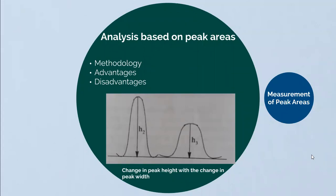Another method is analysis based on peak areas. In order to avoid the variation in the measurement of peak height with the change in peak width, another parameter — the peak area — is used for quantification. The peak area or area under the curve is independent of the peak width. Thus, broadening of the peaks due to improper control on parameters involved in the van Deemter equation does not affect the accuracy of the quantification process. Hence, measurement of peak areas is preferred over measurement of peak heights. A comparison of areas under the peak for a standard and a sample is made to find the concentration of each compound in the mixture.